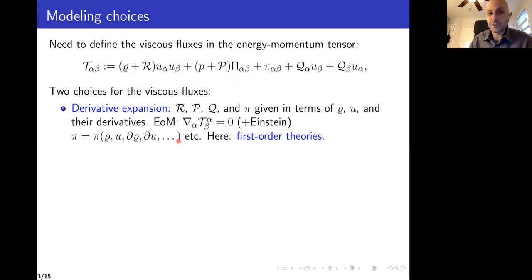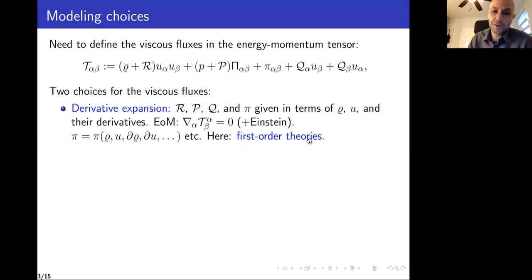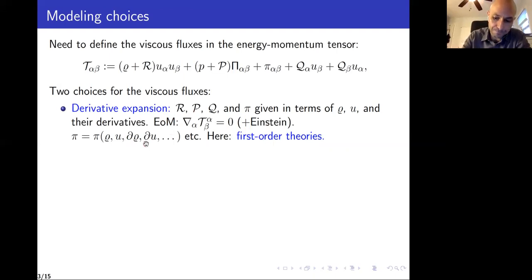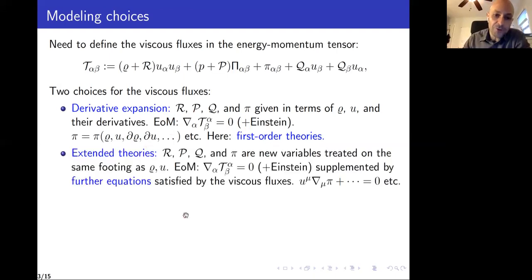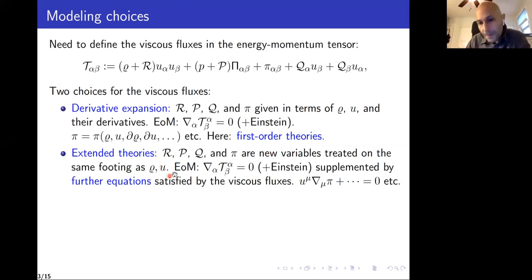In this talk, we're going to consider only derivative expansions up to first order — meaning the viscous fluxes involve only first-order derivatives of the hydrodynamic variables. Another possibility is extended theories, where the viscous fluxes are treated on the same footing as rho and U, so they are new variables. Of course, if you include new variables, you have to supplement your equations of motion with new equations of motion satisfied by the viscous fluxes.